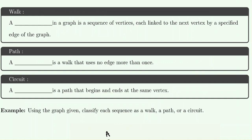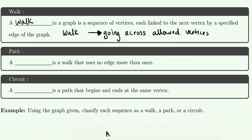Before we get to our next example, we need to introduce three more definitions. A walk in a graph is a sequence of vertices — all this means is that starting at one vertex, you walk along the edges to other vertices. You're going through allowable vertices and not falling off the edge of the graph. A path builds on the idea of a walk: you must first be a walk, meaning you go through allowable edges of the graph, and then the additional criteria is that no edge is used more than once — once you've used an edge, you can't come back and use it again.